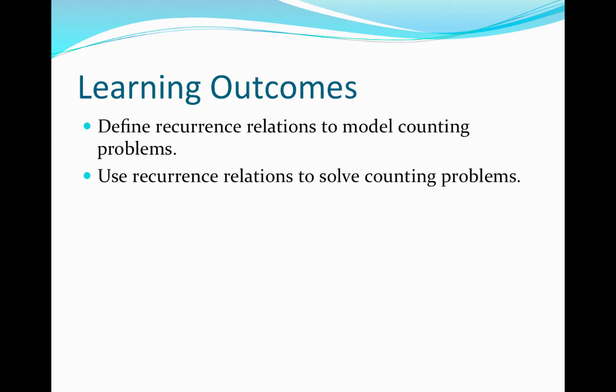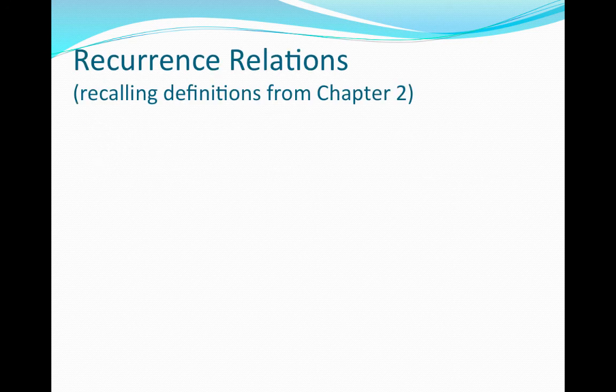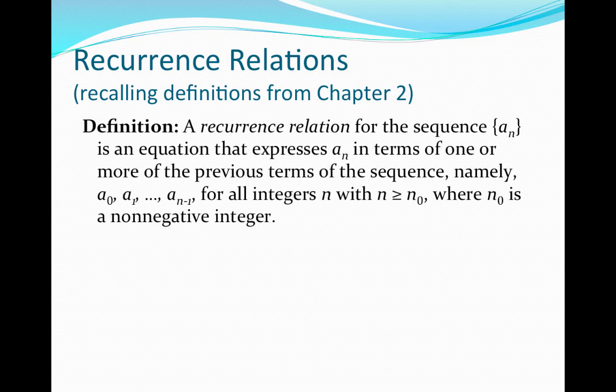So first, let us remind ourselves what a recurrence relation is. So recalling from chapter 2 and section 2.4, a recurrence relation for the sequence a sub n is an equation that expresses a_n in terms of one or more of the previous terms of the sequence, namely any of a_0, a_1, up to a_{n-1}. For all integers n, with n greater than or equal to n_0, where n_0 is a non-negative integer, and moreover, n_0 is the first integer in which we begin defining a recurrence relation.